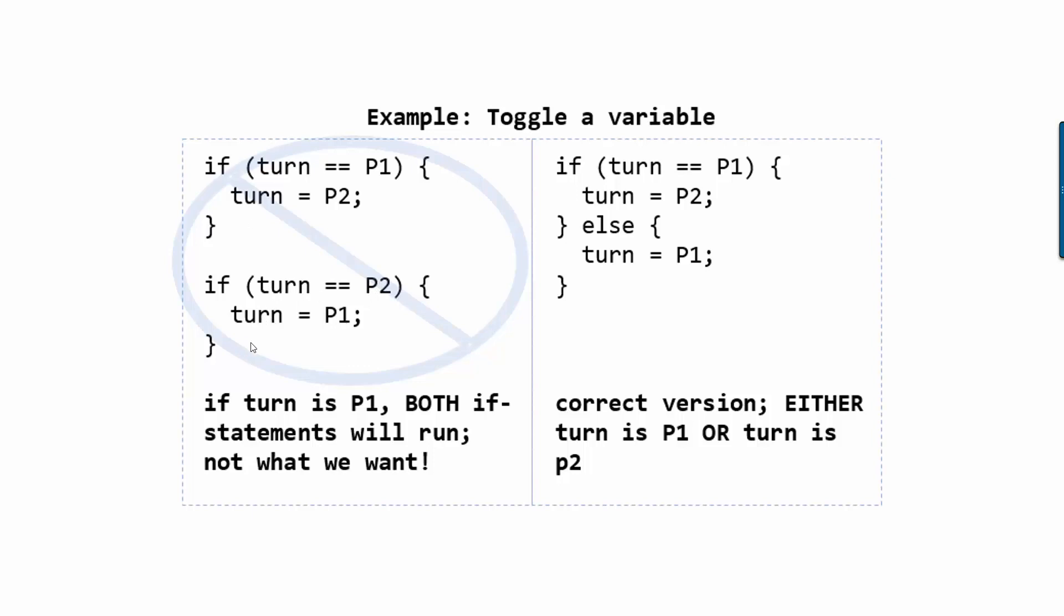So without the else, both of the if statements will run. So when you're programming, you want to think before you have a chain of ifs, whether you want potentially all of them to be true and execute all of them, or if they're mutually exclusive conditions, if you only would want one of them to run. And if that's true, then you'd want to have an if else chain, or in this case, it's just if else.